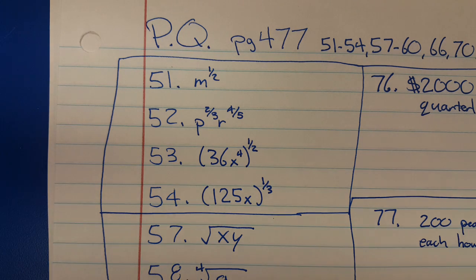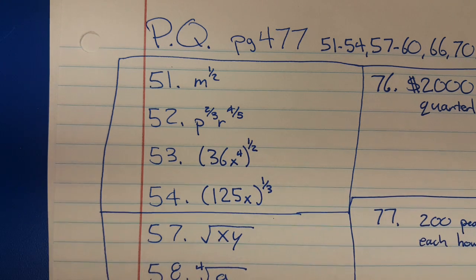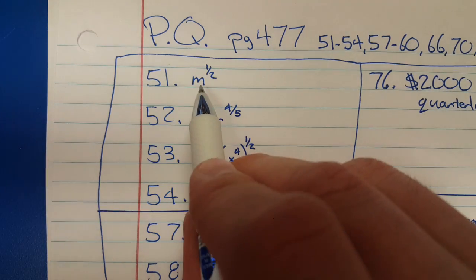Hey students, I wanted to knock this practice quiz out for you. So here we go, the first four on the practice quiz were about taking exponential form and writing it as a radical. Now remember, shortcut here: anything to the half power is just the square root of that item.